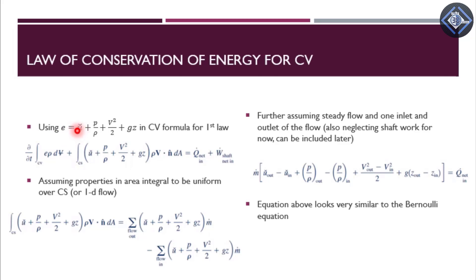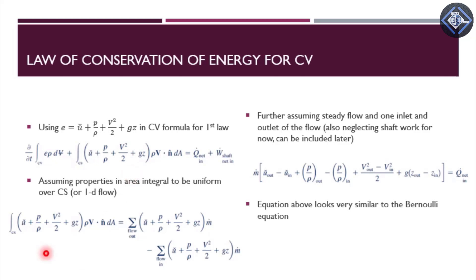Now our law of conservation of energy for a control volume: we replace e with its component form, where e equals internal energy per unit mass plus p/ρ (energy due to pressure) plus V²/2 plus gz. We substitute this into the control volume formula of the first law. Assuming that properties inside the integral over the control surface are uniform — that is, assuming one-dimensional flow — this is standard practice from deriving conservation of mass and conservation of linear momentum.